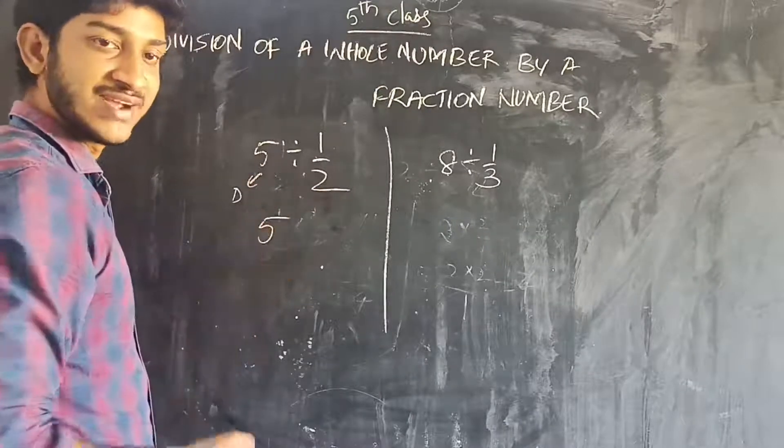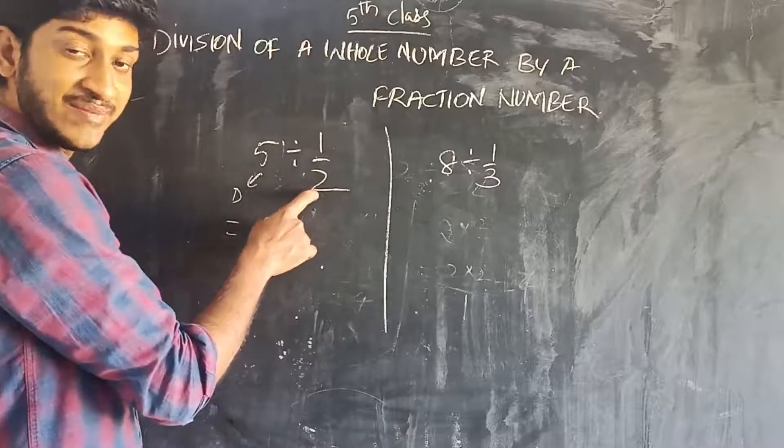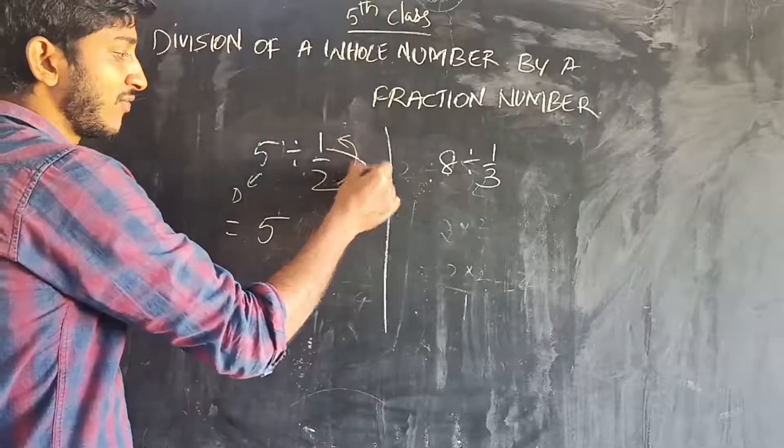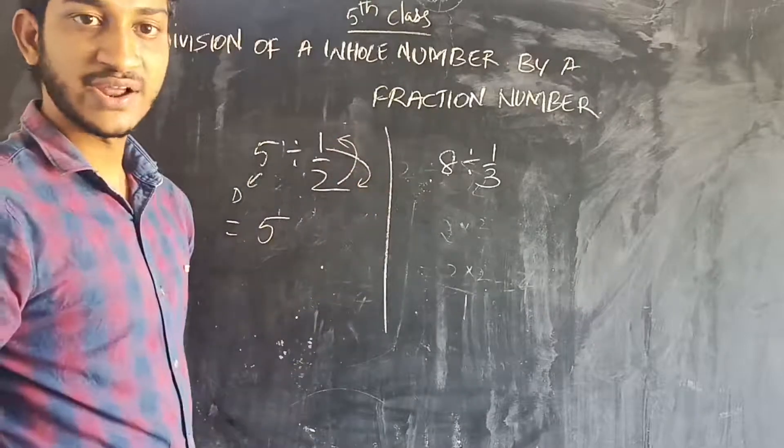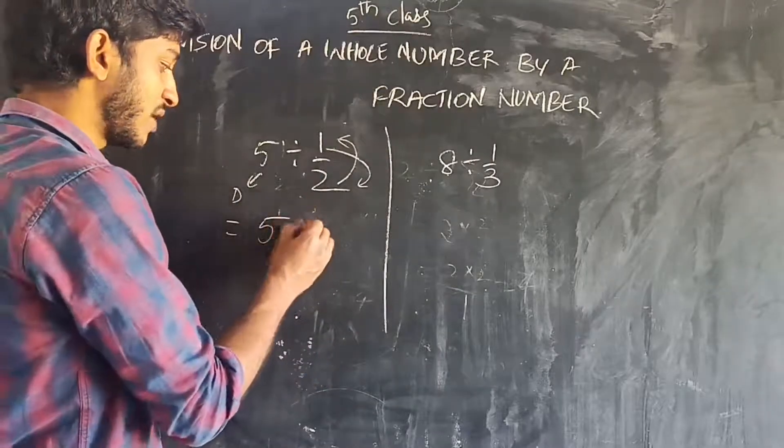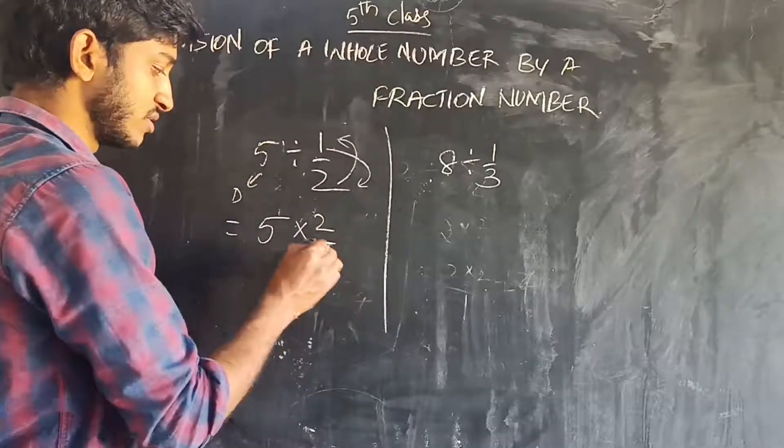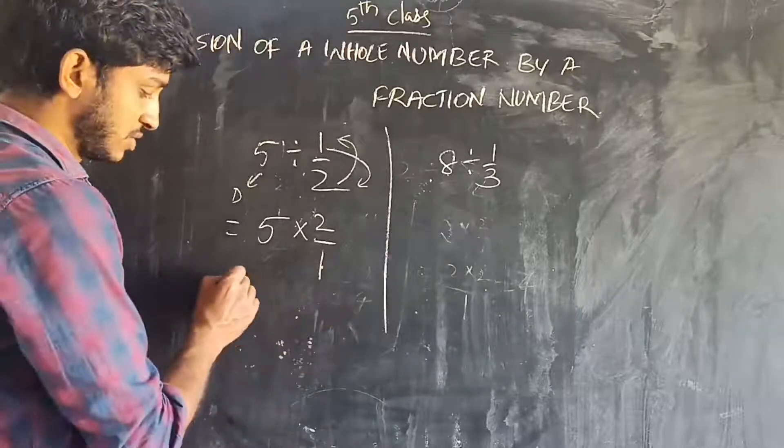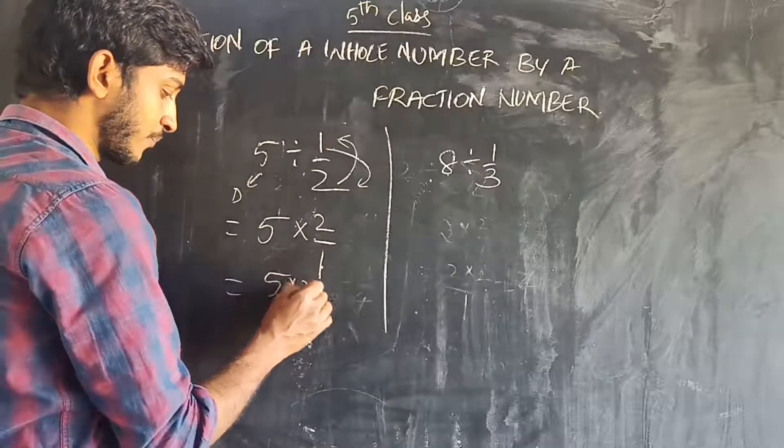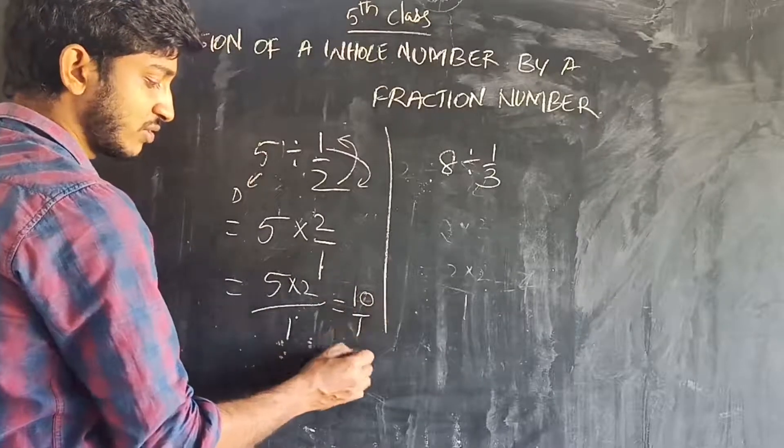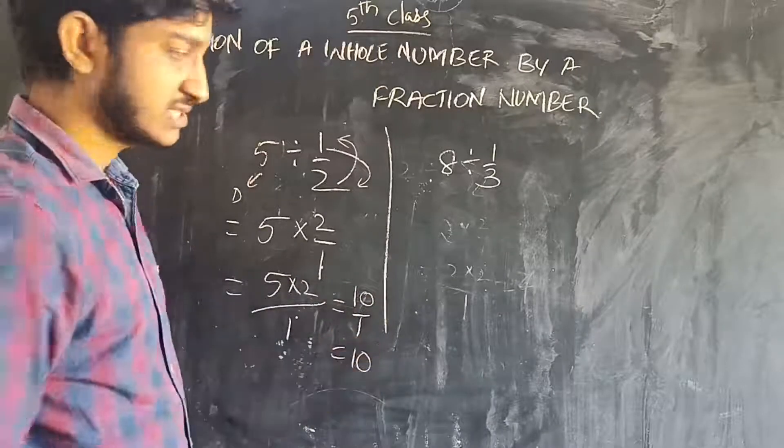The divisor difference. We use divisor reciprocal. So, 2 by 1 becomes, the denominator becomes numerator and numerator becomes denominator. That we get 2 by 1 becomes the numerator. So multiply. 5 into 2 by 1 that is equal to 10. 10 by 1 is equal to 10.